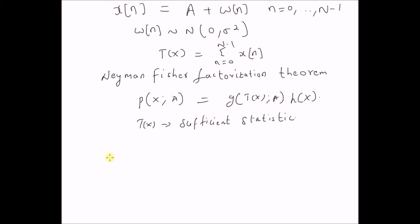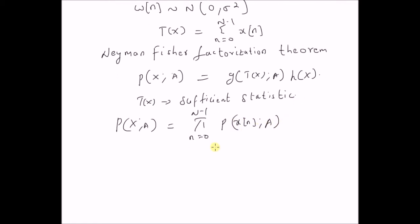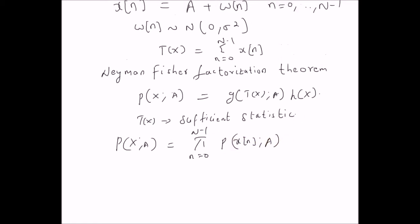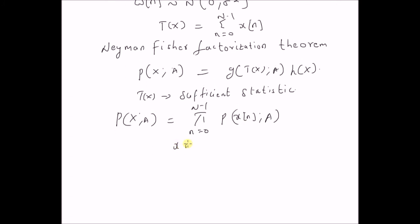For this model, the probability distribution p(x; a) can be written as the product from n equal to 0 to N minus 1 of the distribution of x(n) with parameter a. From the model x(n) equal to a plus w(n), we know that the distribution of x(n) is a Gaussian distribution with mean equal to a and variance equal to sigma squared.